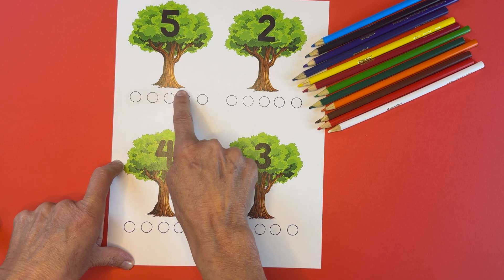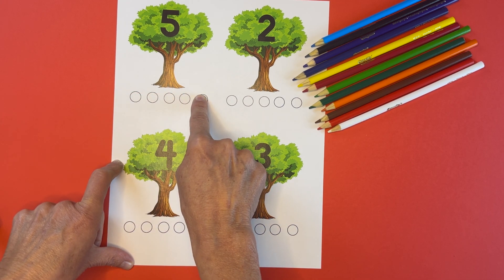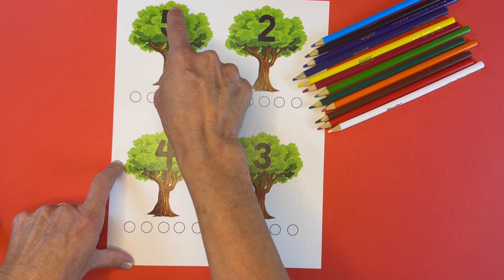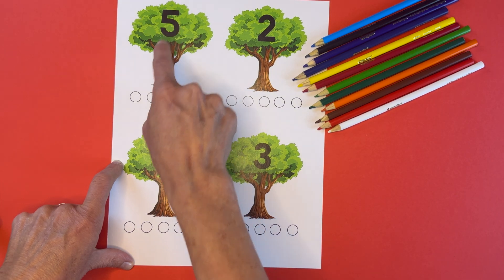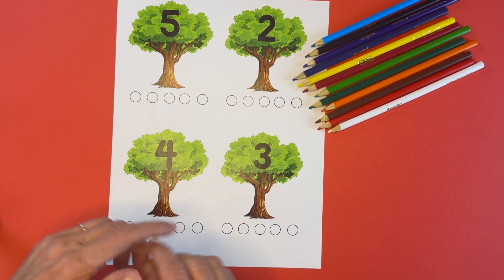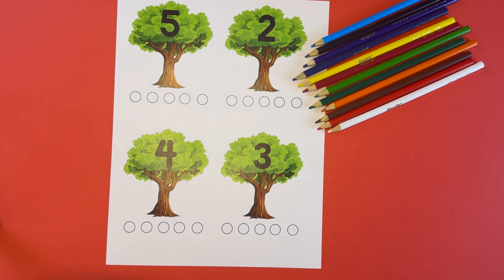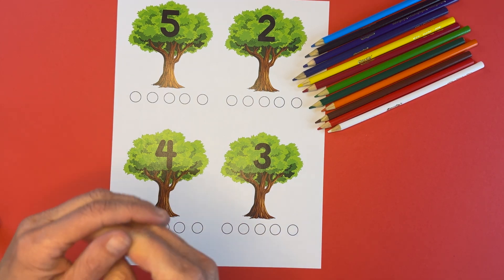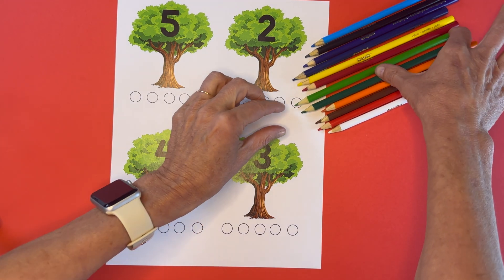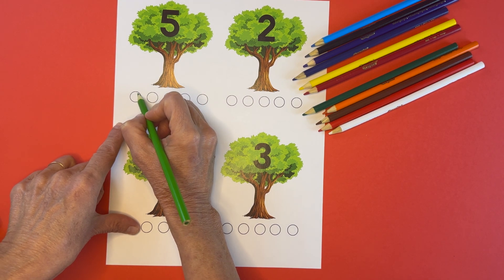Now these are going to be our apples and we want to have the same number of apples down here all colored in as the number that's on the tree. So this tree has a five on it. That means we're going to color in five apples down here. Now let me see. I've got these colors and I could use purple if I wanted to, but I've never seen a purple apple and I'm trying to keep it so it looks real. I'm going to do green. I'll start with green. I'm going to do five green apples. Will you count with me?